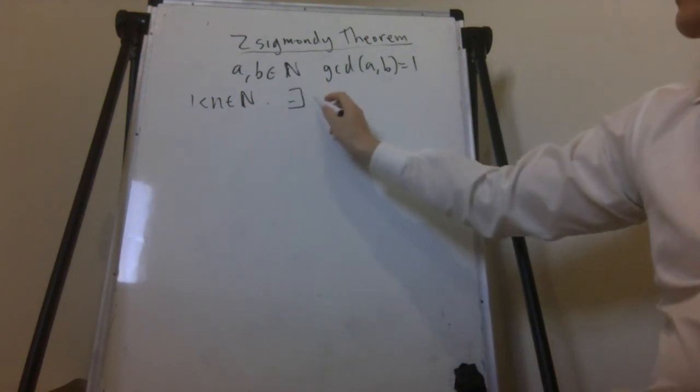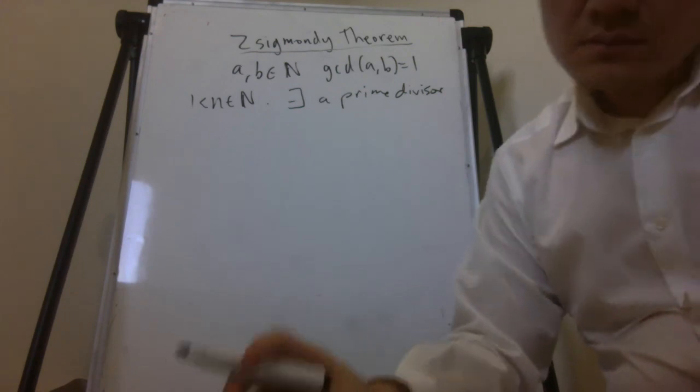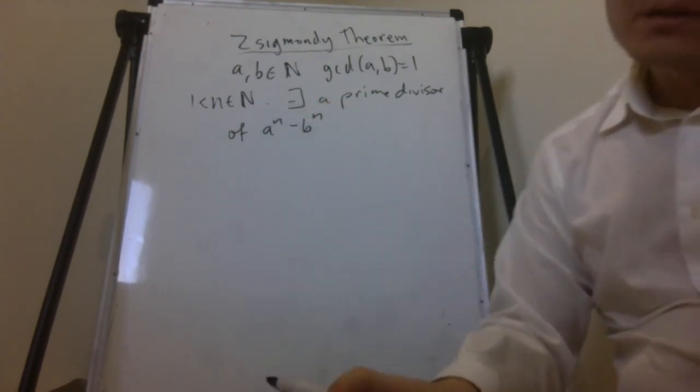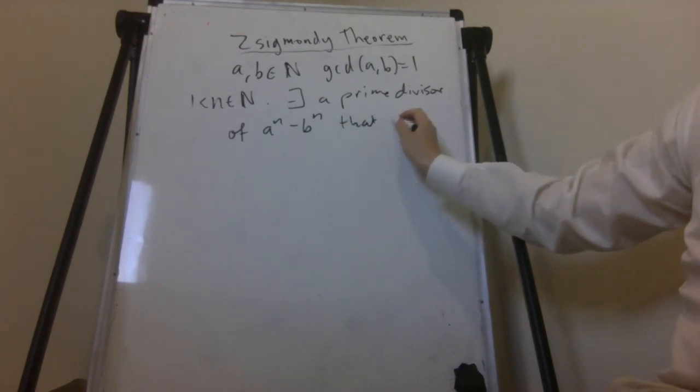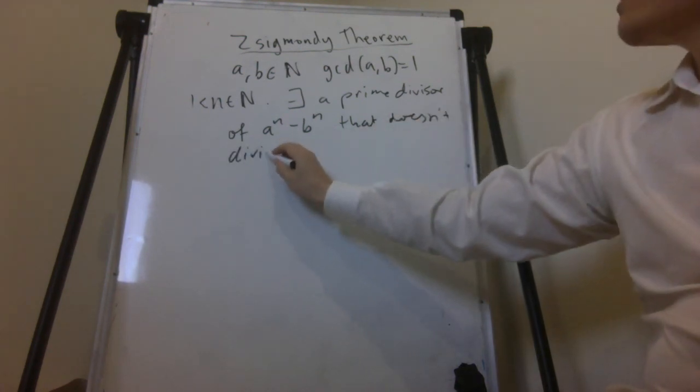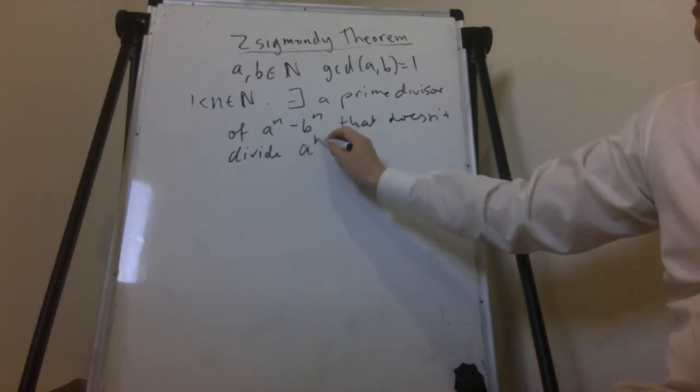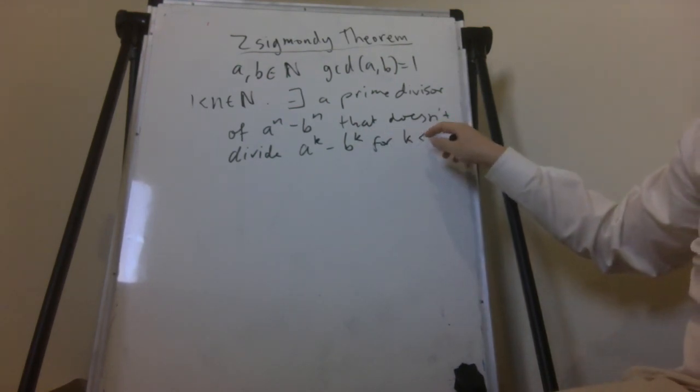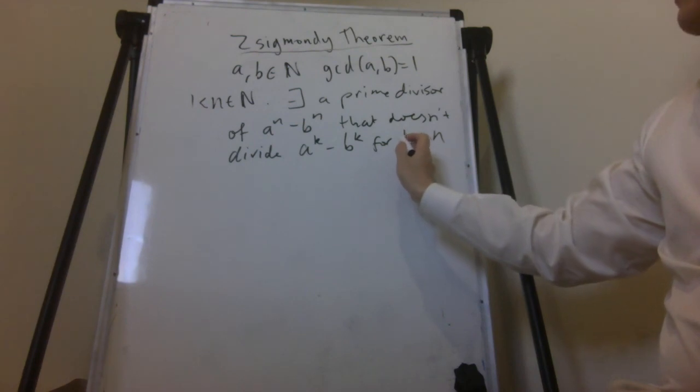So there exists a prime divisor of a to the n minus b to the n that does not divide a to the k minus b to the k for k less than n. That's positive k less than n.